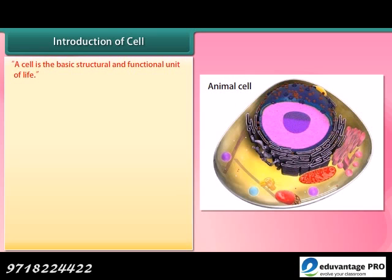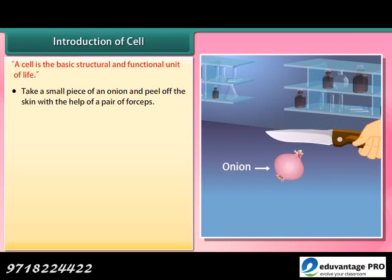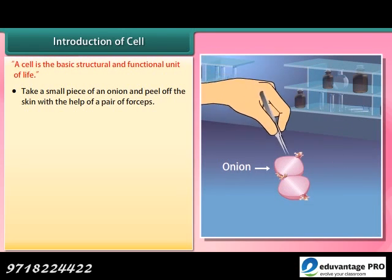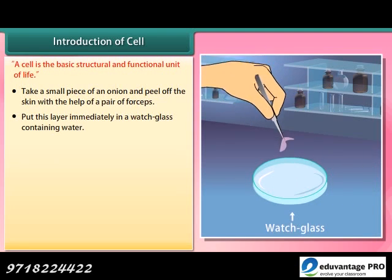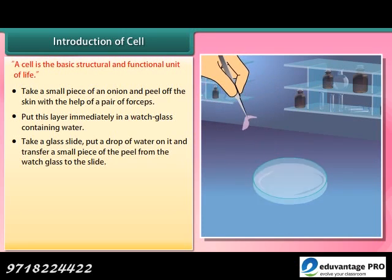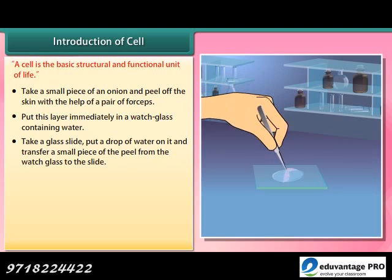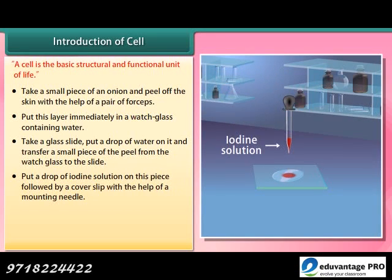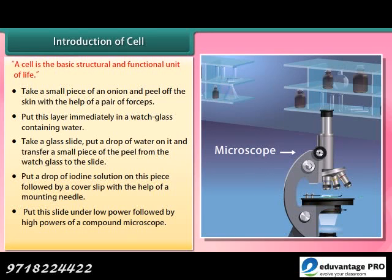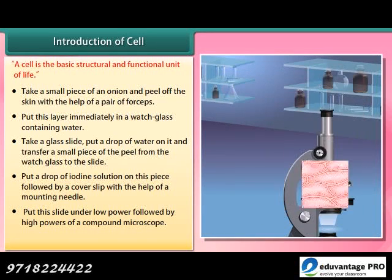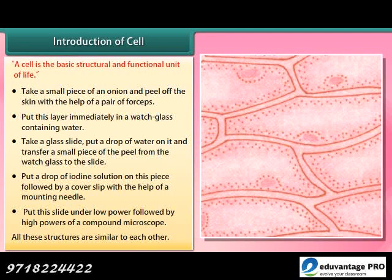A cell is the basic structural and functional unit of life. Experiment: Take a small piece of an onion and peel off the skin with the help of a pair of forceps. Put this layer immediately in a watch glass containing water. Take a glass slide, put a drop of water on it and transfer a small piece of the peel to the slide. Put a drop of iodine solution on this piece followed by a cover slip. Put this slide under low power followed by high power of a compound microscope. All these structures are similar to each other.